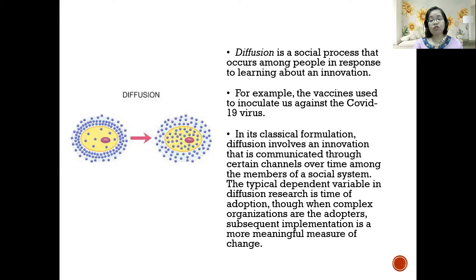Let's understand the term diffusion, which is a social process that occurs among people in response to learning about some new development or innovation. For example, the vaccines used to inoculate us against the COVID-19 virus is an example of an innovation that quickly spread. In its classical formulation, diffusion involves an innovation that is communicated through certain channels over time among the members of a social system.